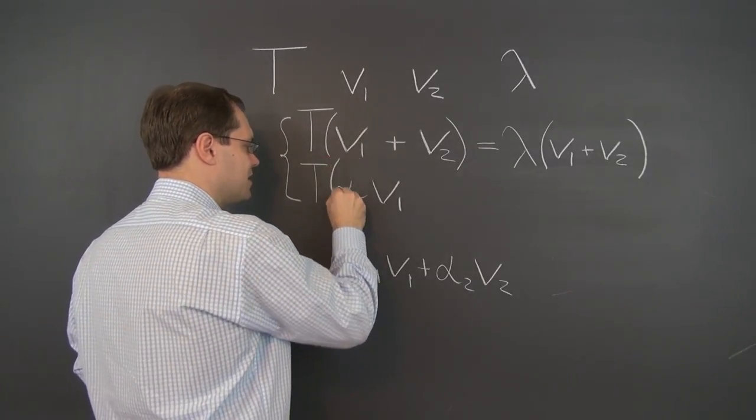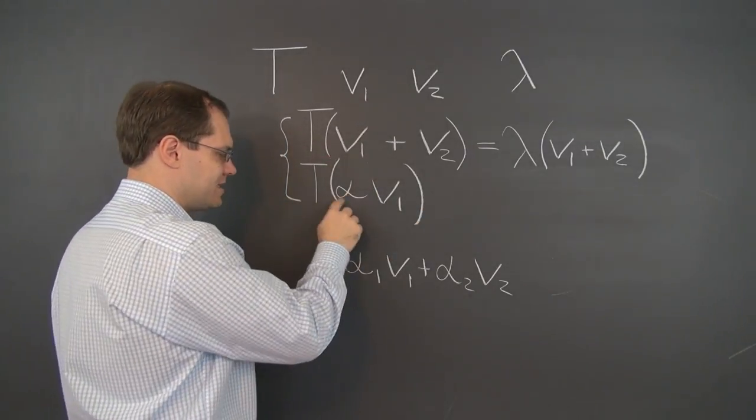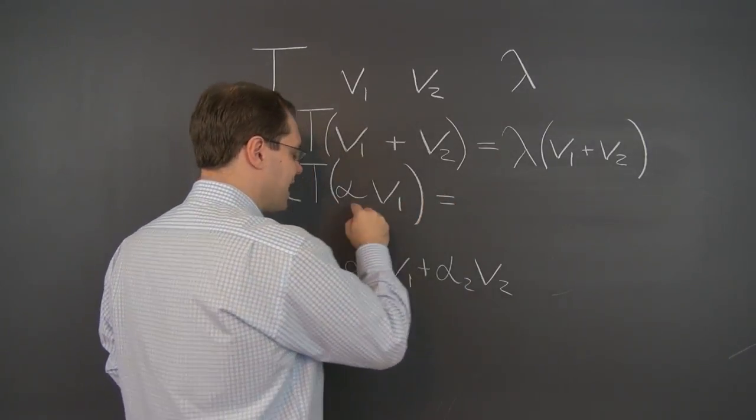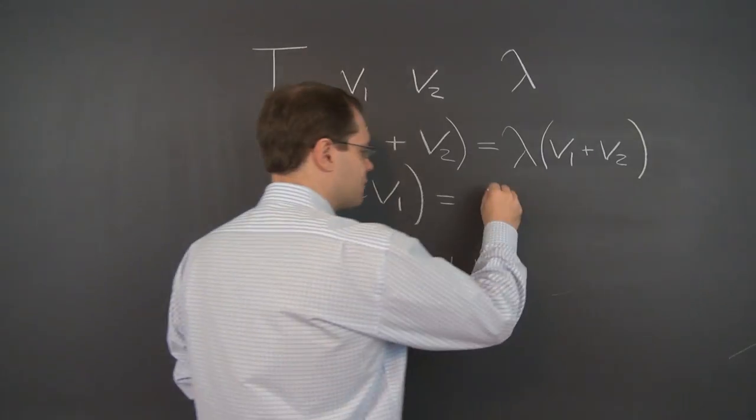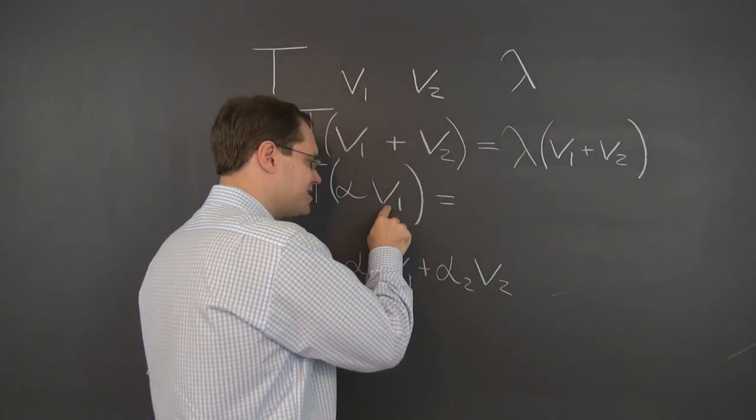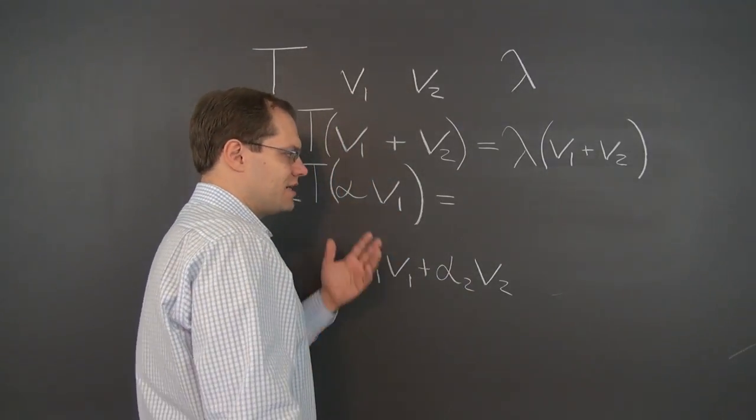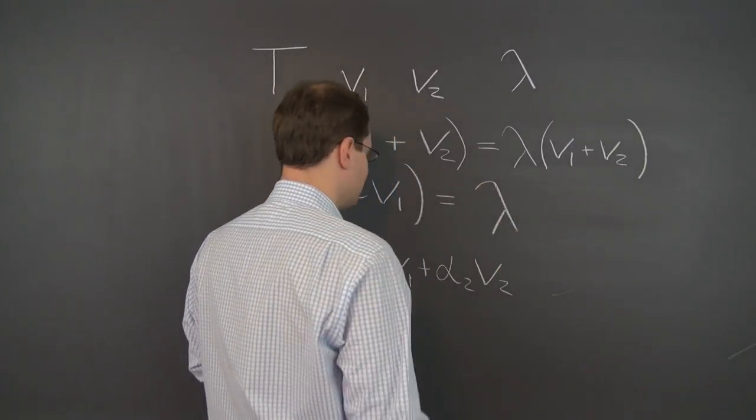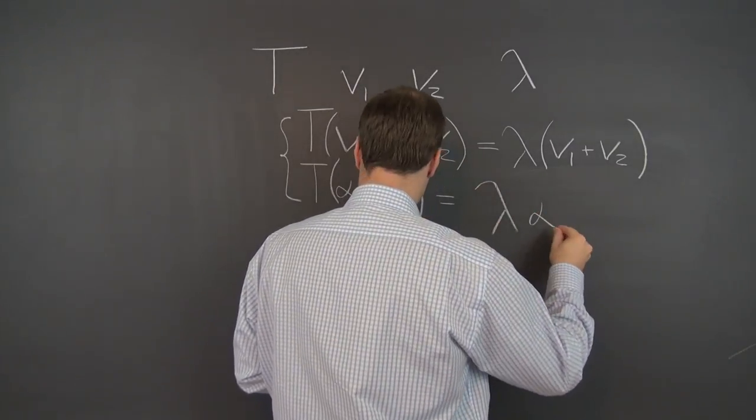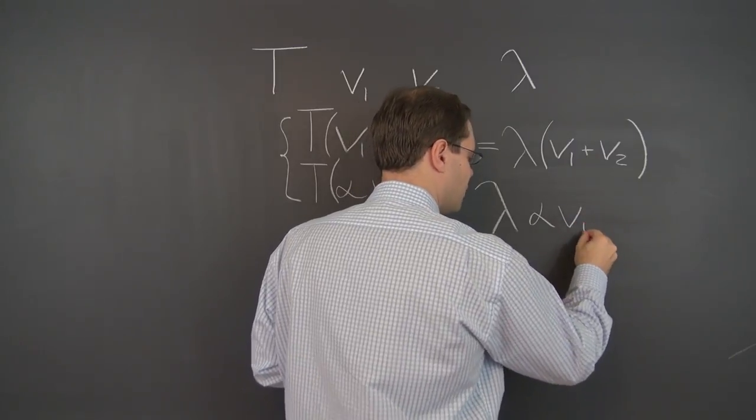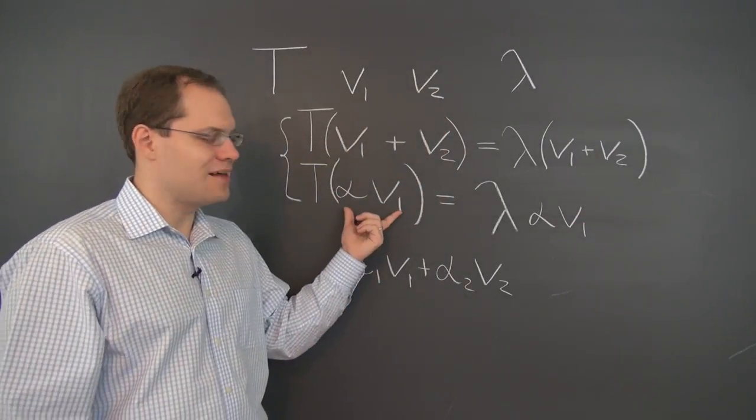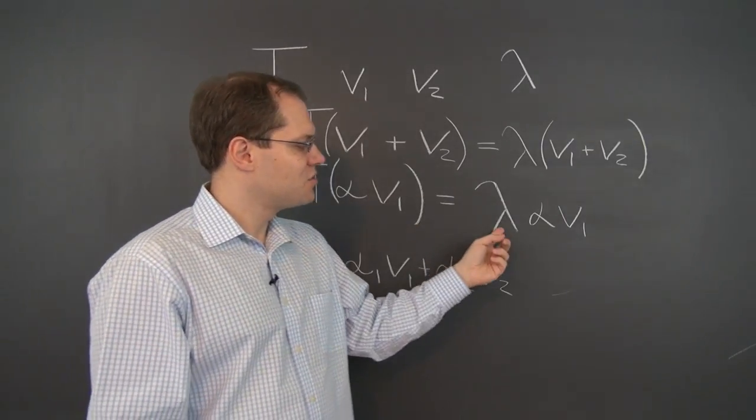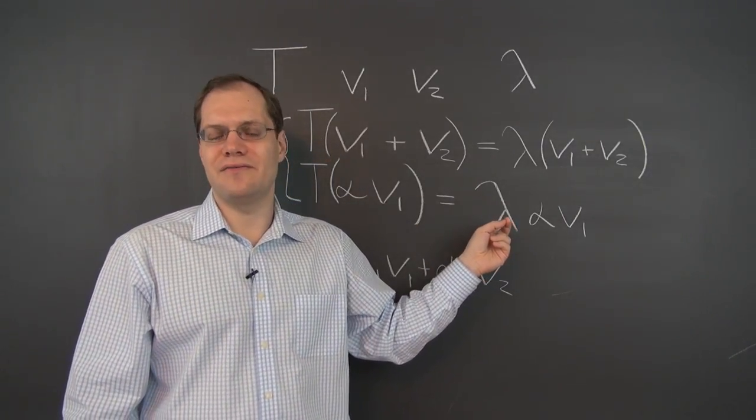What about the multiplication test? Well, once again, by linearity, this can be written as alpha T of V1, and of course alpha T of V1 is lambda V1 for obvious reasons. So the whole vector can be written as lambda alpha V1. And this shows that alpha V1 is an eigenvector of the linear transformation T corresponding to the same eigenvalue lambda.